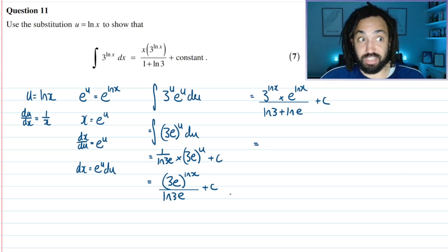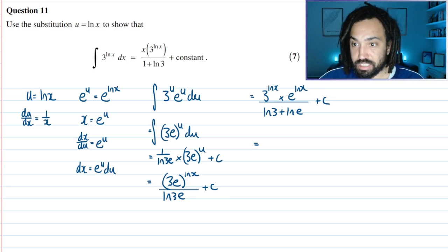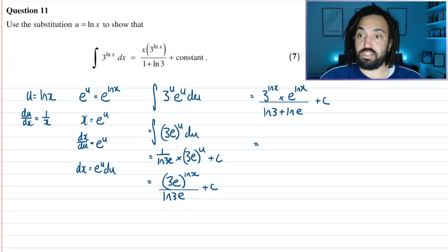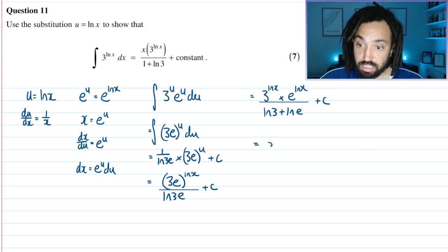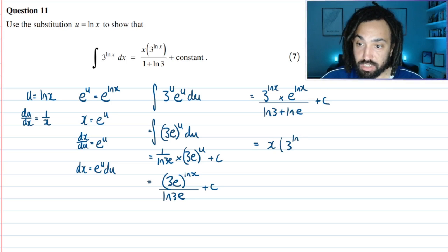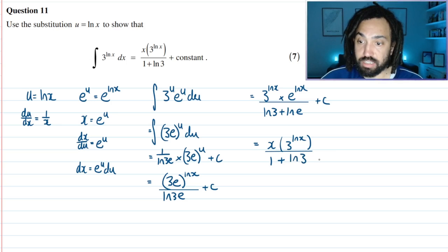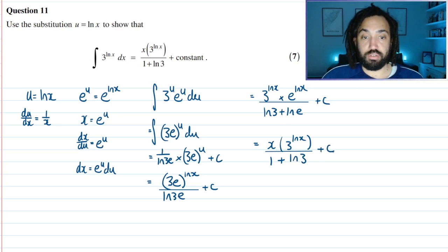This is going to give me... e to the ln of x is just x, because e and ln are inverse functions of one another. And this is 3^(ln x) times x. This is all over, well, ln of e is one, and ln 3, plus c. Beautiful.